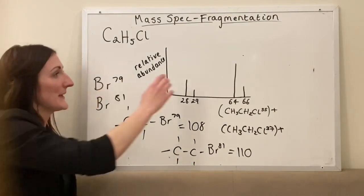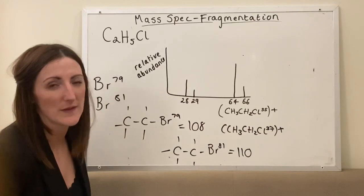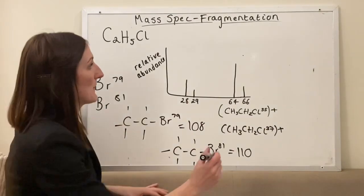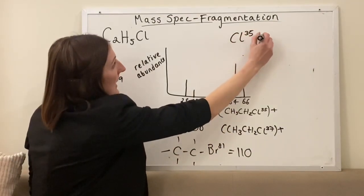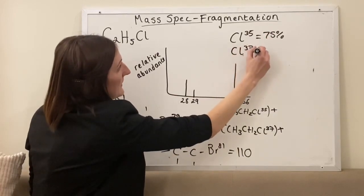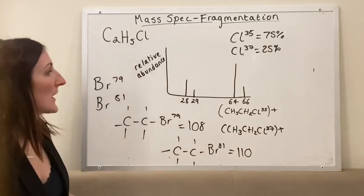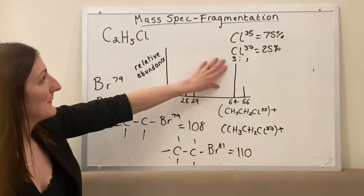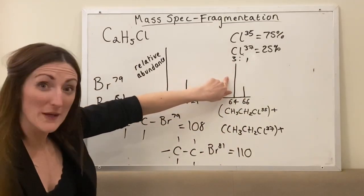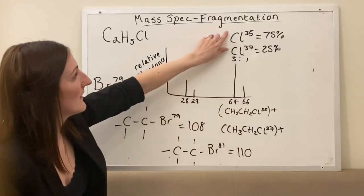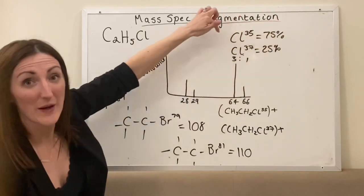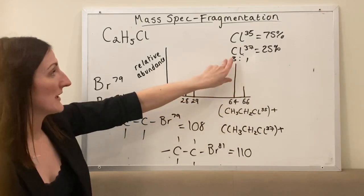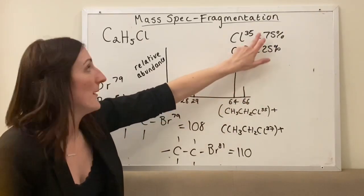The only thing we haven't mentioned is the peak intensities — we can also determine those. Going back to our chlorine example: chlorine-35 has an abundance of 75% and chlorine-37 is 25%. That is why the spectrum shows a ratio of 3 to 1 — it's far more likely for chloroethane to weigh 64, since 75% of naturally occurring chlorine is Cl-35, and much less likely to get the Cl-37 version.